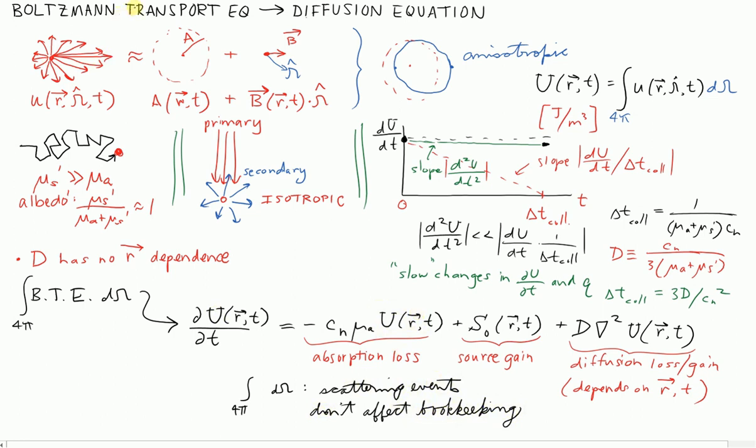Because we're no longer keeping track with capital U of the photons that are heading in a particular direction. We're only keeping track of the total energy density at locations in space. So it's kind of neat that the scattering events cancel themselves out. So in going from Boltzmann to diffusion, we have a new term that we're keeping track of. We have a new scattering dependence. We go to the reduced scattering approximation. We make some assumptions about the ratio of scattering to absorption,